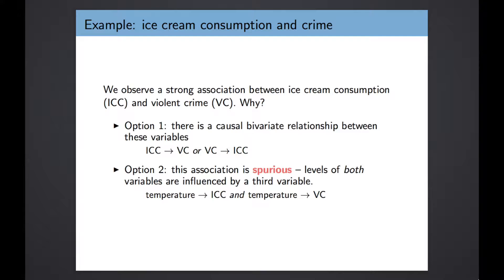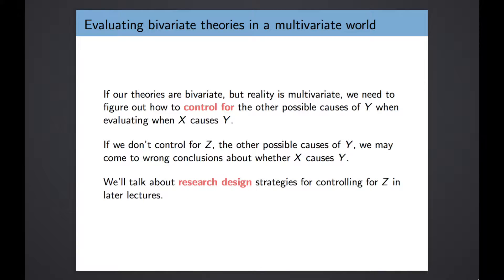The relationship we see could be driven by third variables, and even if the connection between those variables is causal, we don't necessarily know the direction of causality. The complication of the world we live in makes it hard to evaluate bivariate theories, but it doesn't make it impossible. There are still ways to find a causal connection between variables. What we have to do is figure out a way to control for the other possible causes of y — take into account the other variables that might be influencing the outcome and making it harder to pin down the exact relationship between x and y. If we don't control for these other variables z, we might come to the wrong conclusion about the relationship between x and y.